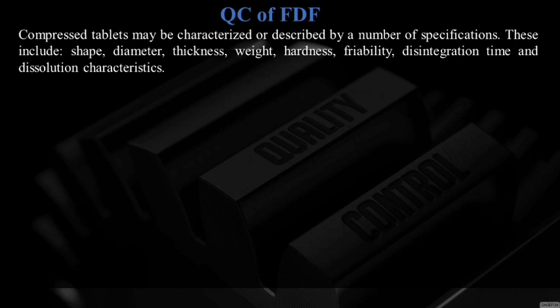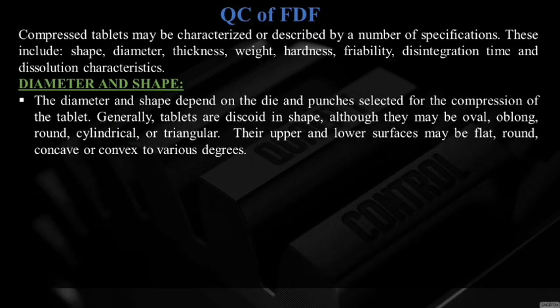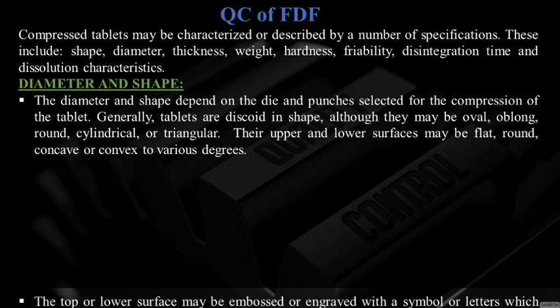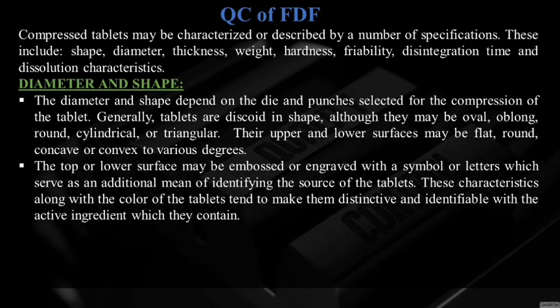Quality control of finished dosage forms — compressed tablets may be characterized by a number of specifications including shape, diameter, thickness, weight, hardness, friability, disintegration time, and dissolution characteristics. The diameter and shape depend on the dies and punches selected. Tablets are generally described in shape — they may be oblong, oval, round, cylindrical, or triangular. The upper and lower surfaces may be flat, concave, or convex. They may be embossed or engraved with a symbol or letter, which serves as an additional means of identifying the source of the tablets.